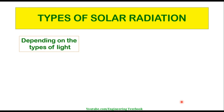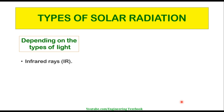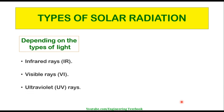Depending on the type of light, there are again three types of solar radiation: infrared radiation, visible radiation or rays, and ultraviolet radiation or rays.